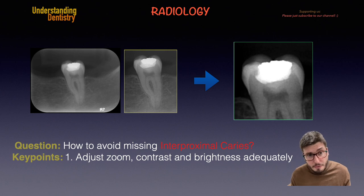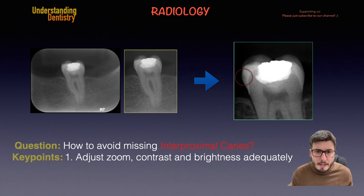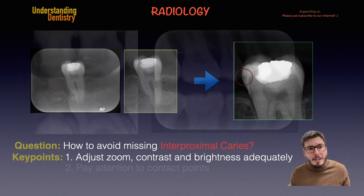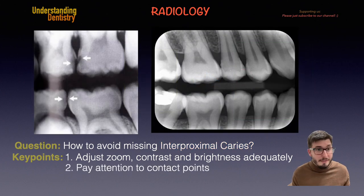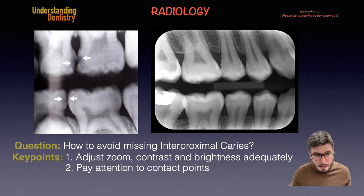On the left side of your screen it's more challenging to see, but on the right side we can actually see the interproximal caries because we have enhanced the contrast and brightness. If we see more advanced caries with dentin involvement, then it's even easier. This leads us to the second key point.